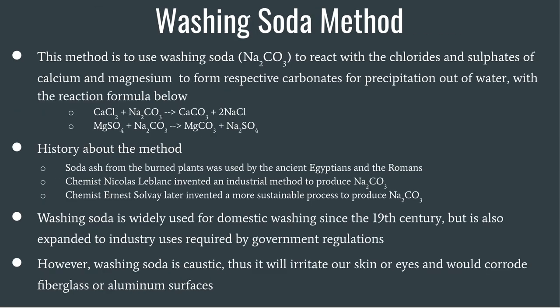What is the washing soda method? This method uses washing soda to react with the chlorides and sulfates of calcium and magnesium to form their respective carbonates, which then precipitate out of water, as shown in the reaction formula below.